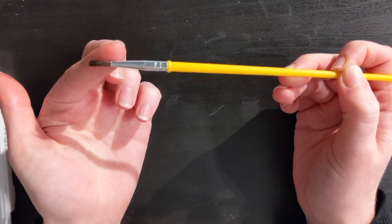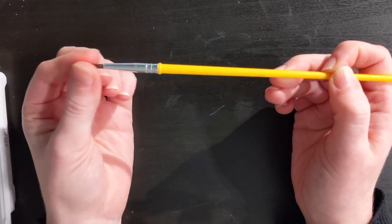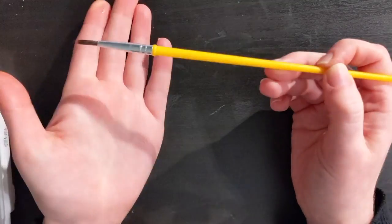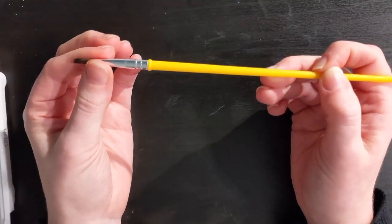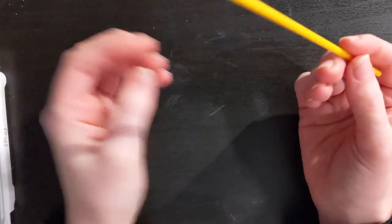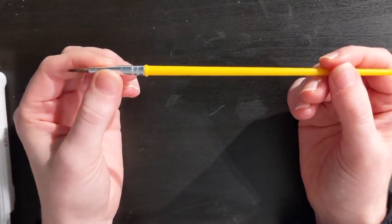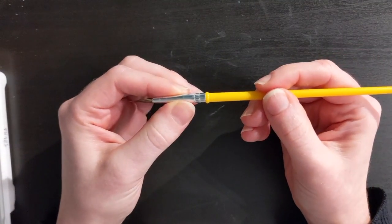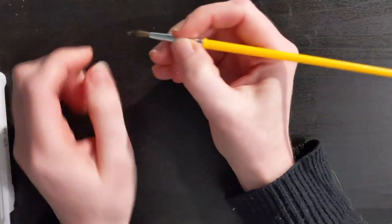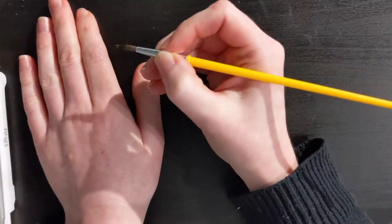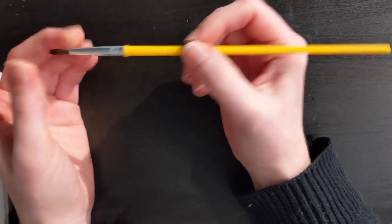You also want to hold your paintbrush like it's a pencil. If you hold it far away like this you don't have a lot of control, but you want to move your hand closer. If you hold it right here on the metal you have a lot of control, but as long as you have it in the middle that's good.